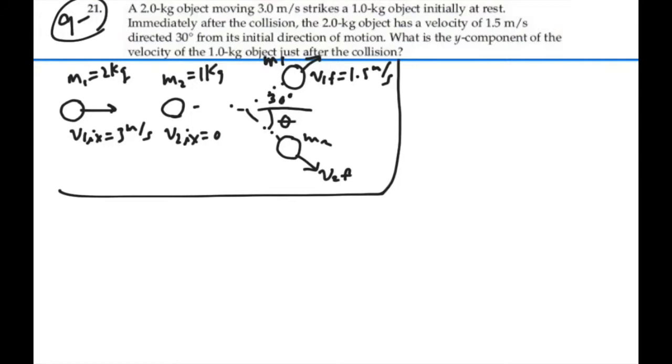Let's find our final velocity for mass 1 in the y direction. v1 final in the y direction is going to be equal to v1 final times the sine of 30 degrees. So that's going to be equal to 1.5 times the sine of 30 which is 1 half. So this would be 0.75 m per second.